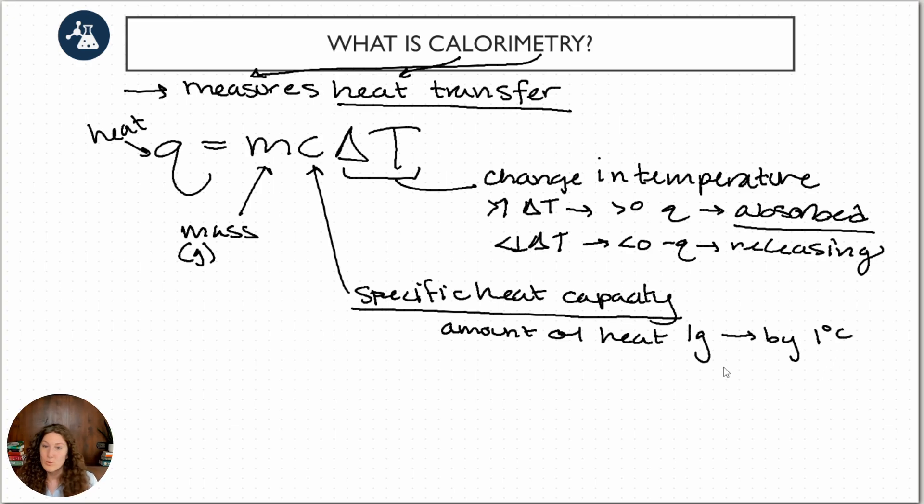So if we had one gram of water, let's say, and we wanted to increase it by one degree Celsius, how much heat would that take? Well for water, for pure water, that would be 4.2 joules per gram degrees Celsius. And this is a constant of any pure water.